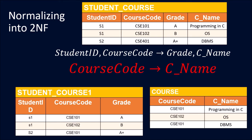To resolve this partial dependency, we split the table into two parts. The first part, student_course, has student ID, course code, and grade. The second part, based on the partial dependency, has course code and course name split into another table.